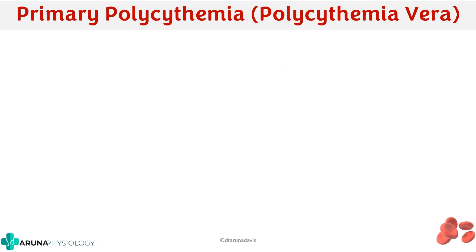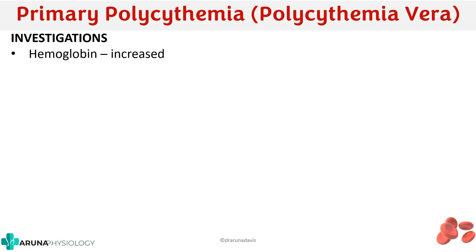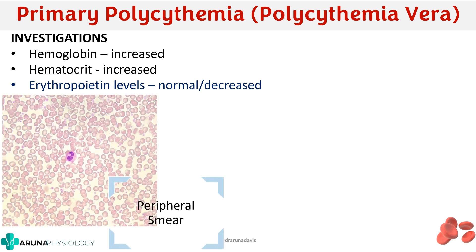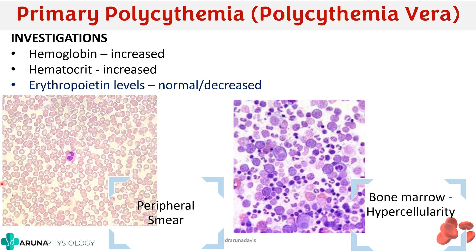For investigations: the number of RBCs is increased, so hemoglobin will be increased and hematocrit will be increased. Erythropoietin levels will be normal or decreased, because the proliferation is not driven by erythropoietin — it is due to a mutation causing increased production of RBCs, WBCs, and platelets. On peripheral smear, there is an increased number of RBCs. Bone marrow aspirate will show a highly hypercellular marrow with all cell lines increased in number.